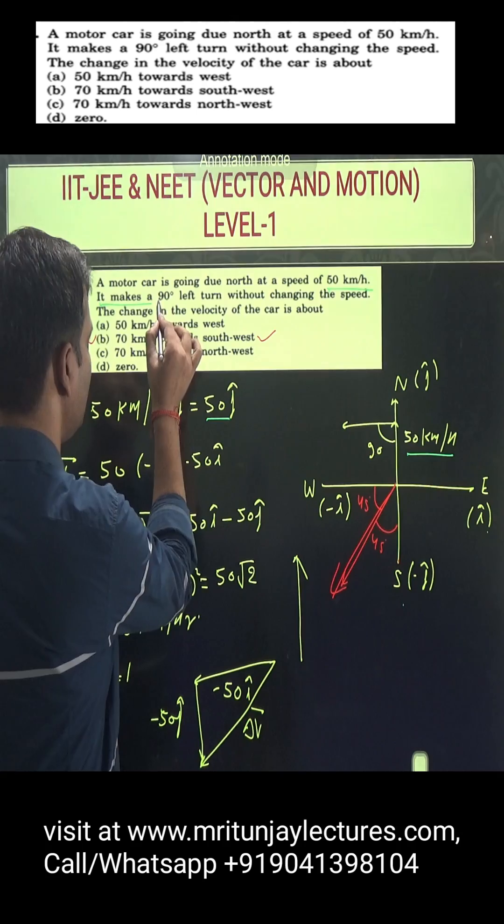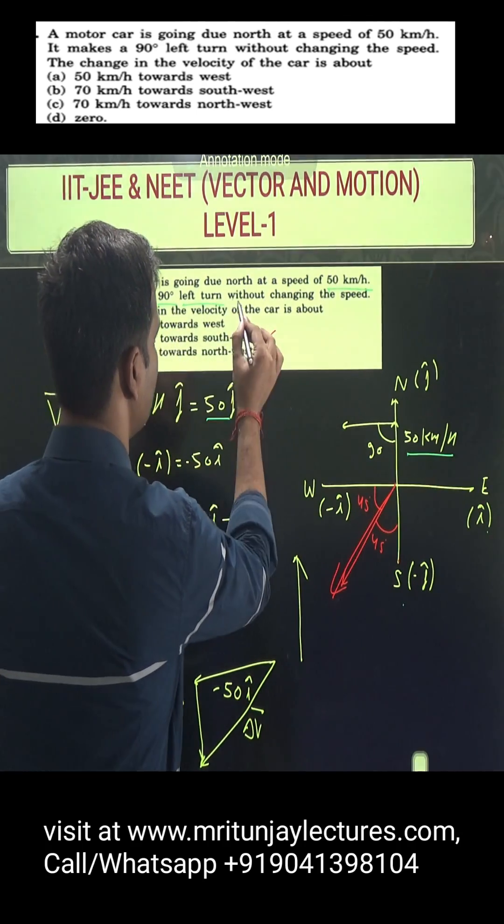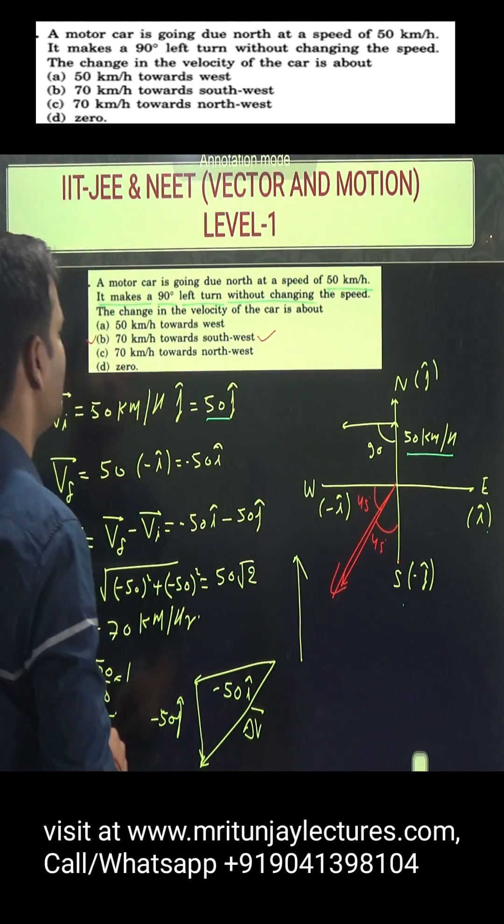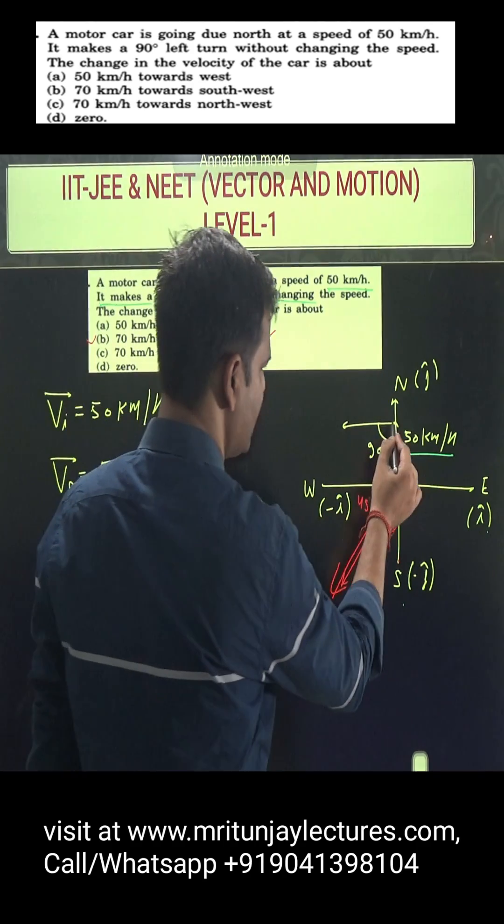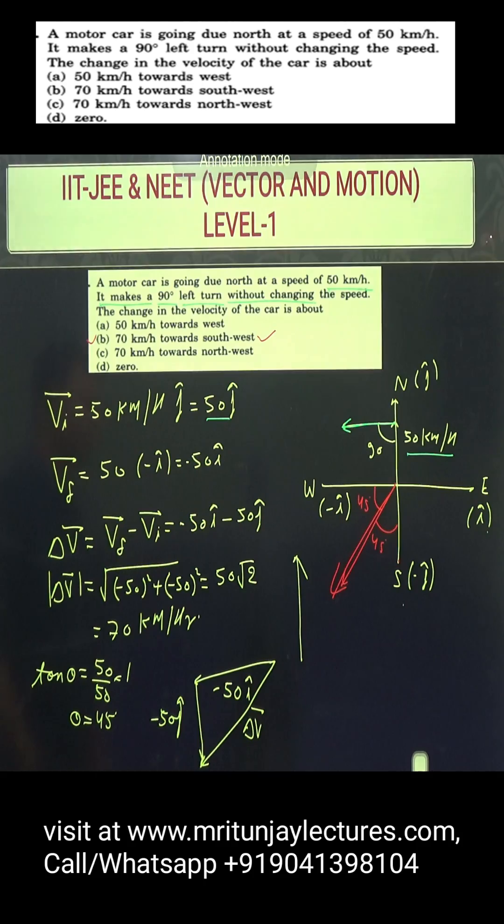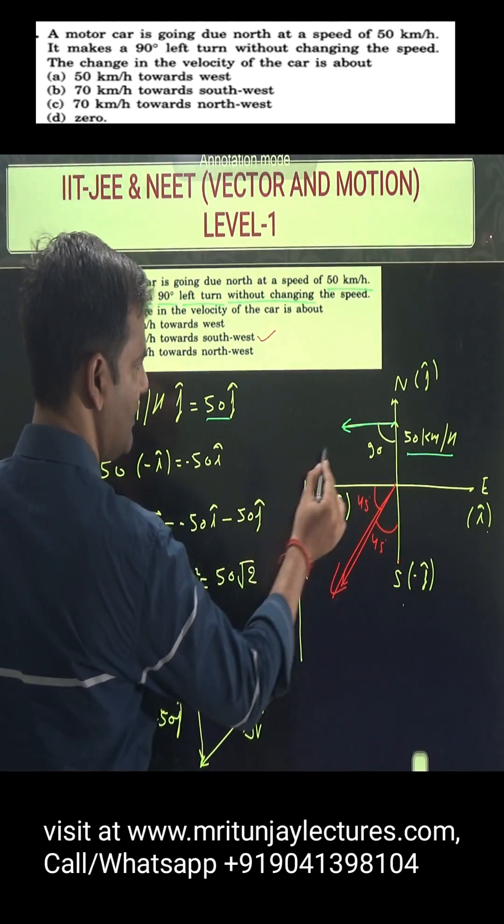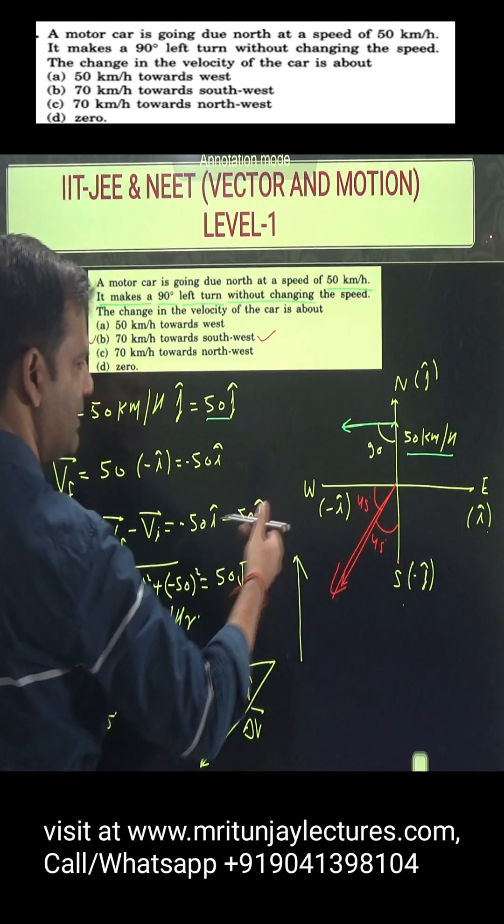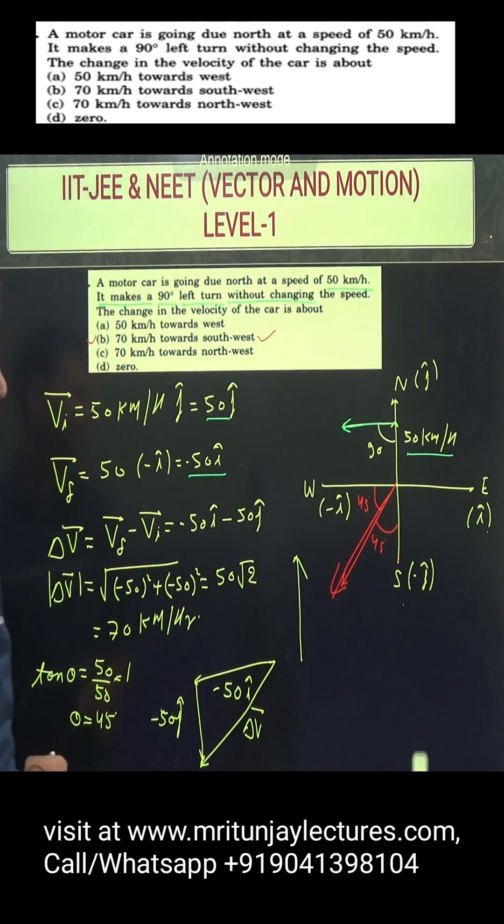It makes a 90 degree left turn without changing the speed. Left turn 90 degrees without changing speed means the final velocity is in the minus i direction, so it is written as minus 50 i.